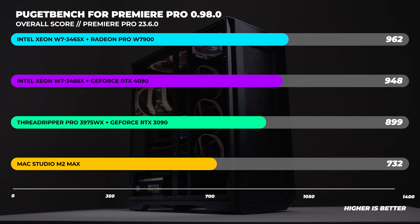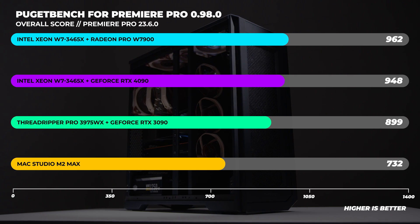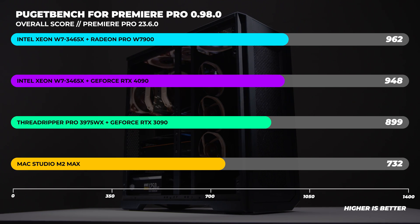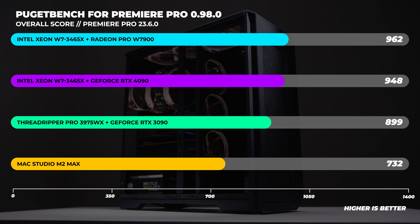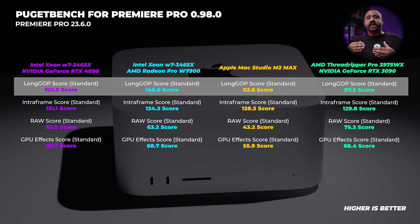Finally onto Adobe Premiere Pro. Compared to all the other tests, Premiere Pro is always the content creation outlier and a make-or-break set of benchmarks for many professionals. The Xeon system with the Radeon Pro W7900 is the fastest configuration, with the Mac Studio coming in last place. Premiere favours lots of CPU cores, lots of VRAM, and a very powerful GPU — and it always has and always will. The Radeon Pro has double the video memory of the RTX 4090, which is why the score looks the way it does.